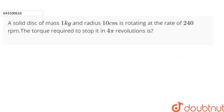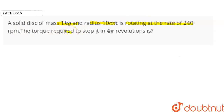Hi everyone. The question is: a solid disk of mass 1 kg and radius 10 cm is rotating at the rate of 240 rotations per minute. The torque required to stop it in 4π revolutions is?